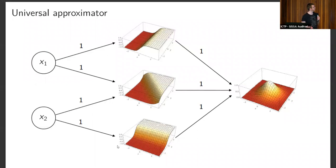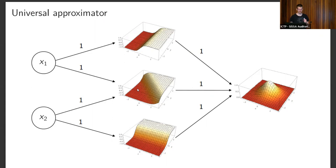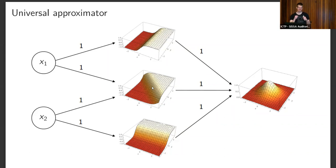Informally, you could have a tanh activation function with two inputs and different weights, and when you recombine them you get something that looks like a Gaussian function. You can separate the space along different hyperplanes and recombine them. Even if inefficient, you could separate each small part of the space and give it a value by scaling — that's one way to think about why one hidden layer is theoretically sufficient.